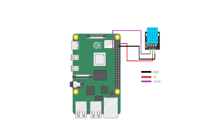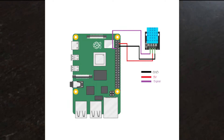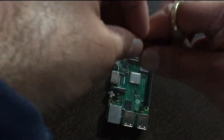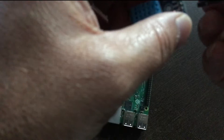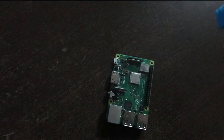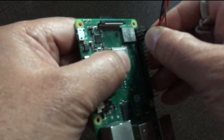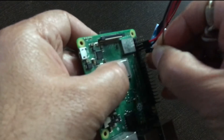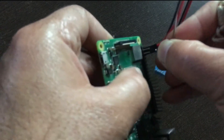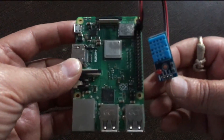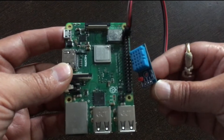This is the circuit diagram to connect the DST11 sensor with Raspberry Pi. Take the three wires and connect the DST11 sensor to the Raspberry Pi. So the connection has been done.